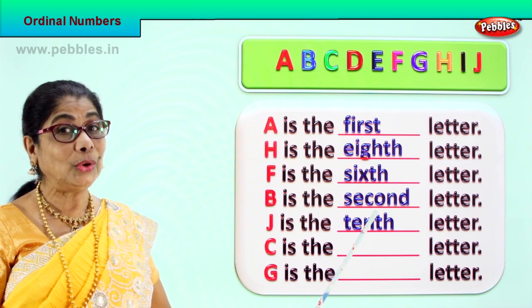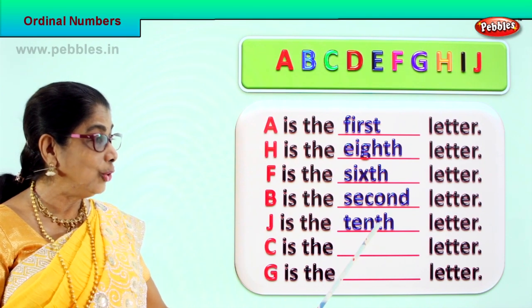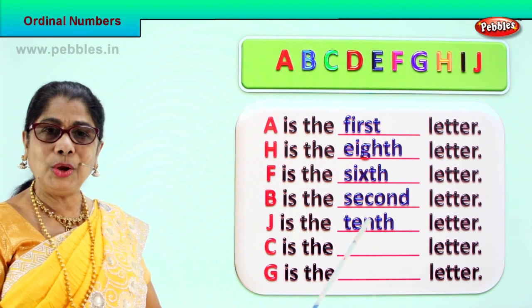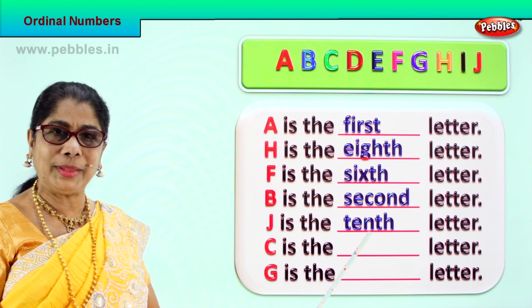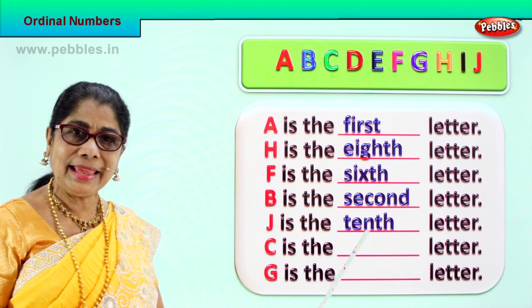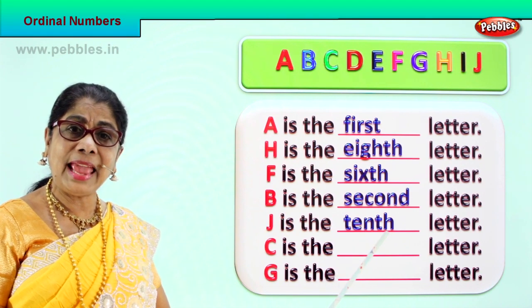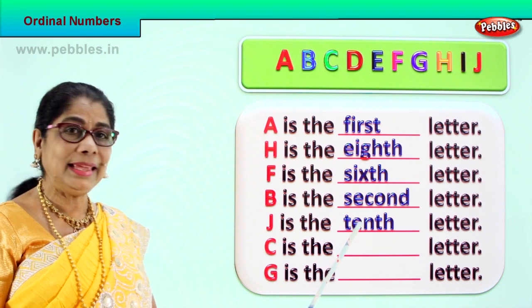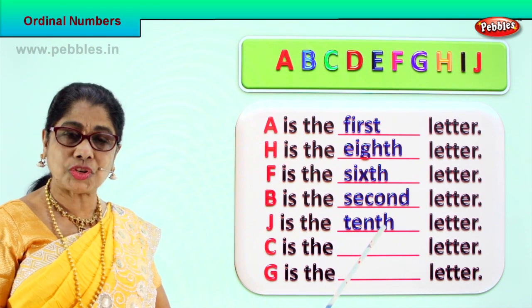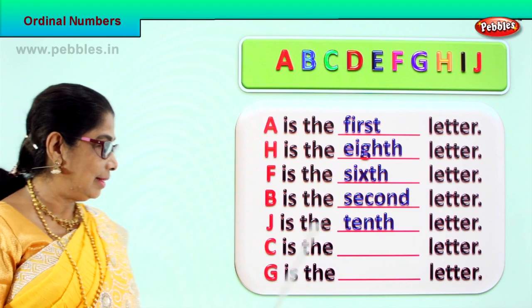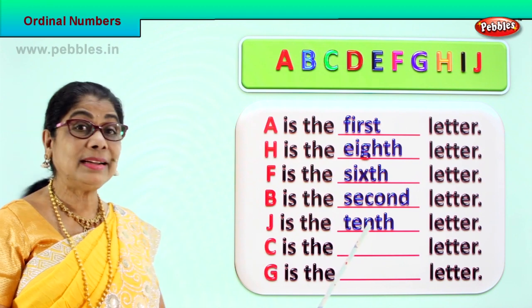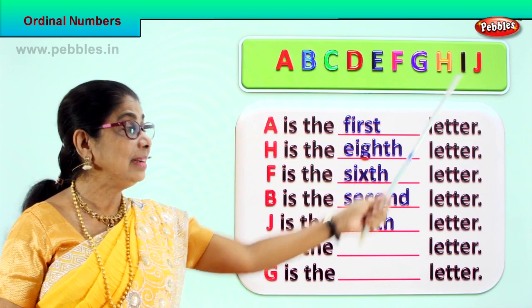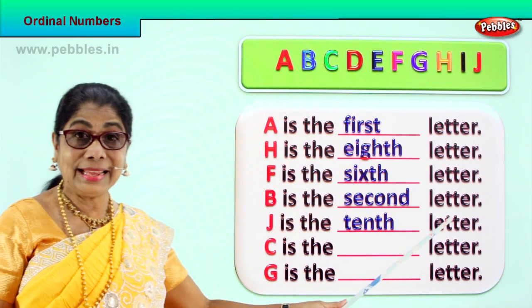Spell tenth. You know how to spell ten — all you need is to add TH. Say the spelling with me: T, E, N, T, H — tenth. J is the tenth letter.